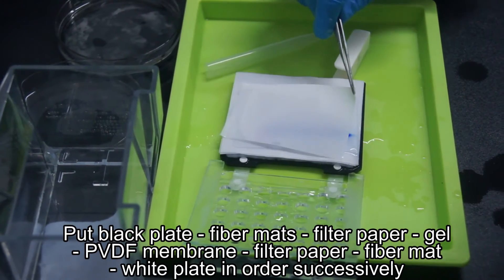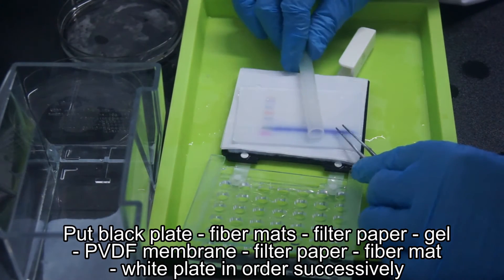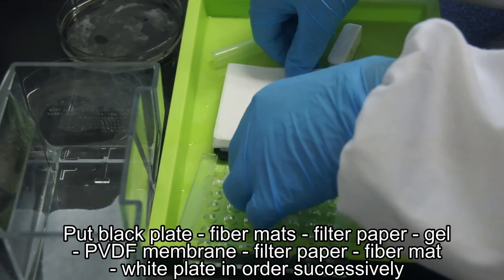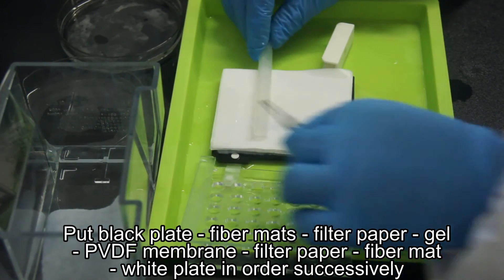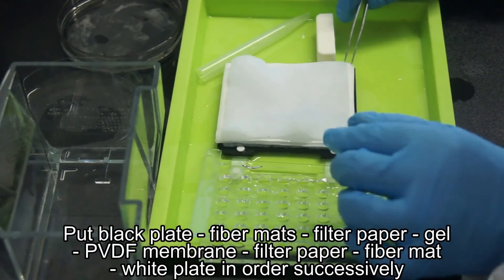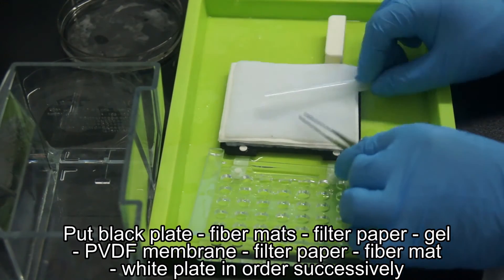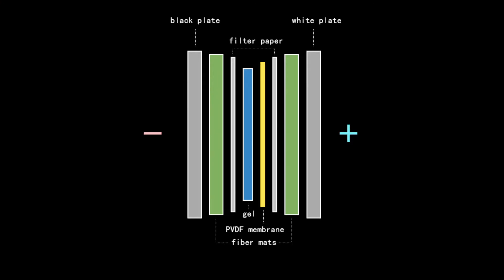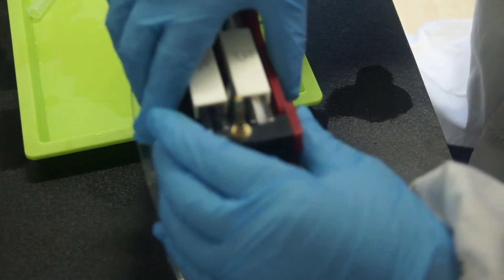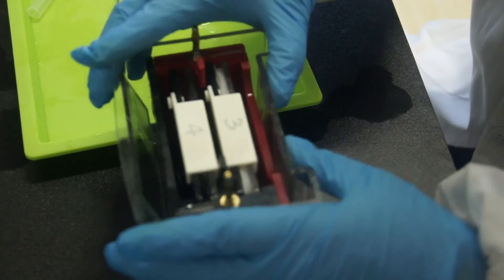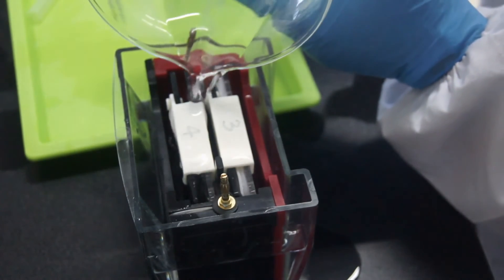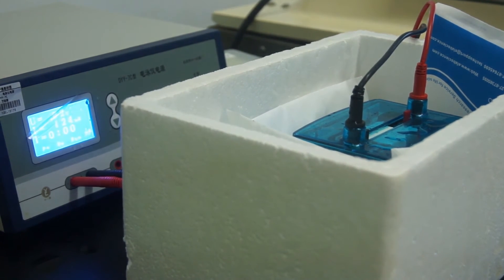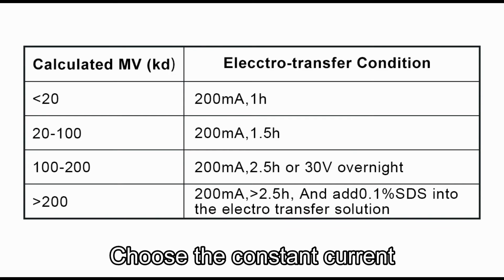In a wet transfer device, the gel and membrane are sandwiched between sponge and filter paper. All these are tightly clamped together to ensure that no air bubbles will form between the gel and membrane. The sandwich device is submerged in transfer buffer in an electrical chamber. The negatively charged proteins will move towards the positively charged electrode, so as to bind with the membrane. Put the electrical chamber in an ice bath. Make sure the PVDF membrane is near the positive pole. Adjust the transferring time according to molecular weight of protein.